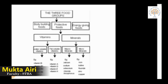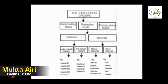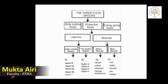Now let us see the three food groups. The first one is body building food, the second one is protective food, and the third one is energy giving food. Protective food is also divided into two groups: vitamins and minerals. Vitamins are of two types: water soluble vitamins and fat soluble vitamins. Minerals are macrominerals and microminerals.